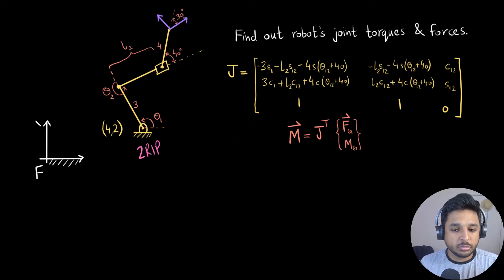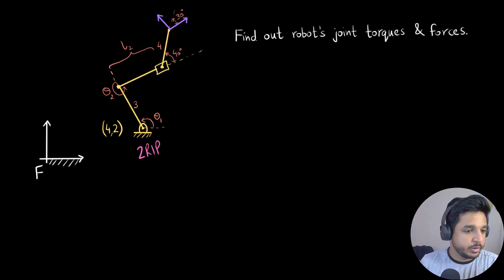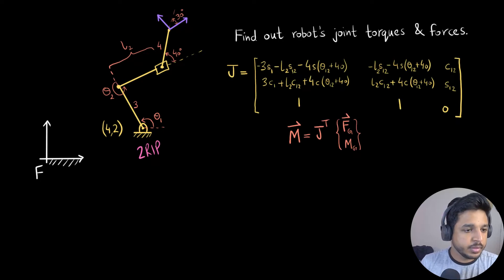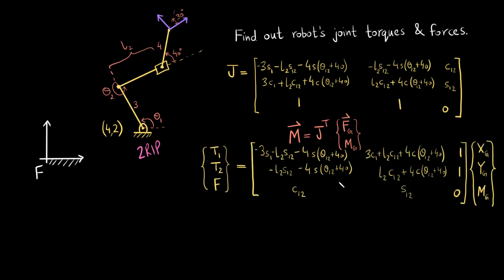So let me just go forward, and I get this where I've just written it out as the Jacobian transpose and I have this. So on the left, I have the robot's joint torques and forces, and on the right, I have this vector which is the force and moment exerted by the gripper.